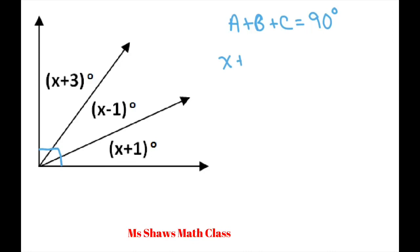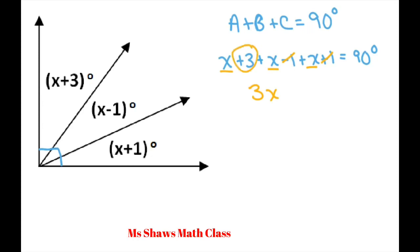In this case we have A plus B plus C equals 90 degrees. So we have — let's just write it out — X plus 3, plus X minus 1, plus X plus 1, equals 90 degrees. Now you have to add your like terms: one, two, three — we have three X's.